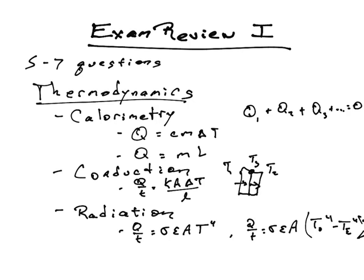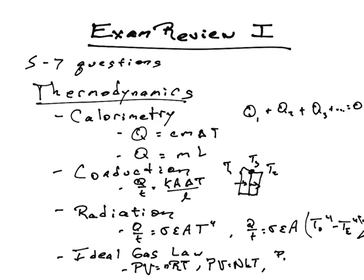And then the last topic we went over was the ideal gas law. Here we had a few different equations: PV equals nRT, PV equals NkT, and P1 V1 over T1 equals P2 V2 over T2.